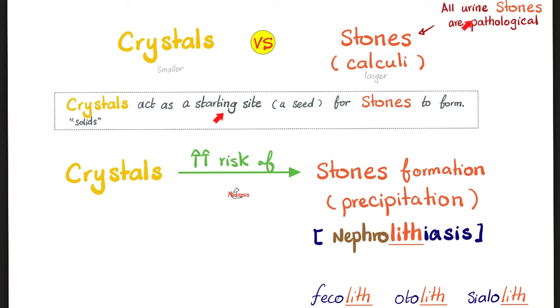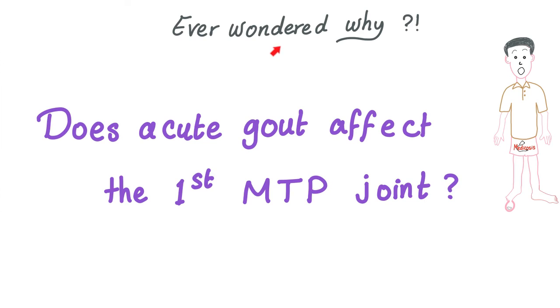Is it normal to have stones in the urine? No — stones in the urine are always pathological. One tiny crystal visible only under the microscope is okay, but stones? Pathological.